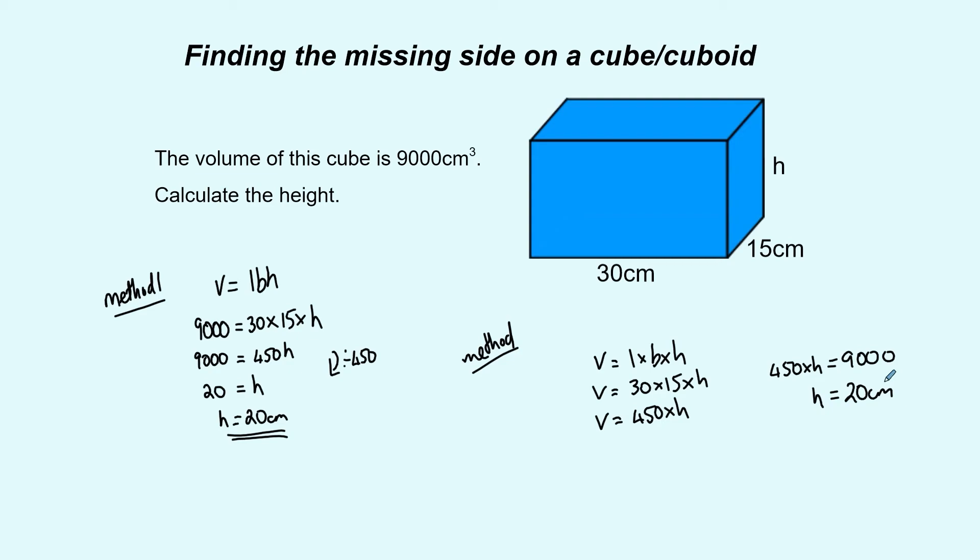Okay so it's a really similar method but the layout is slightly different. It's up to you which one you prefer. You're doing the same basic idea. You're trying to figure out what this missing side is so that when you multiply all three sides together it gives you 9000 cubic centimeters as the volume. And the way you're going to do that is going to be very similar each time but there's slightly different ways to lay out the working. Method 1 would be my preferred method but if you prefer method 2 where you're laying the working out a little bit more separate and that works for you just now that's fine as well.